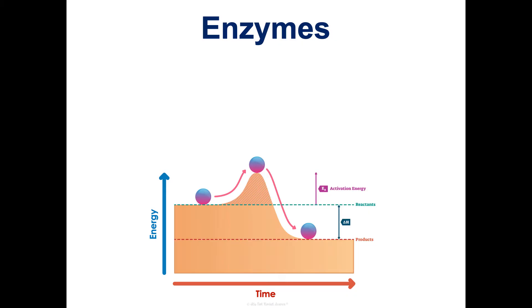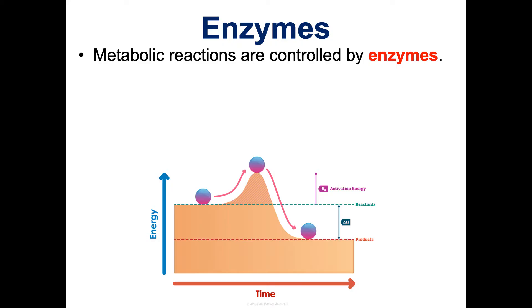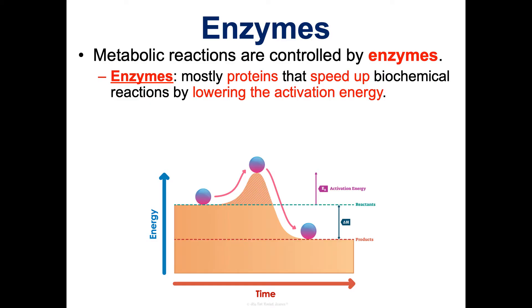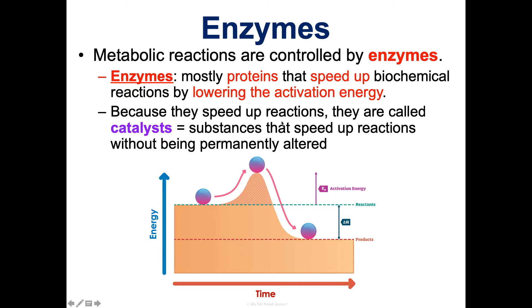Let's talk about enzymes. These are extremely important for metabolic reactions — all of the chemical reactions in your body that keep you alive at a cellular level are controlled by enzymes. Enzymes are mainly proteins — that macromolecule that does so many things. What they do is speed up biochemical reactions by lowering the activation energy, meaning they make it take less energy to get the reaction going. Because they're speeding up reactions, we also call them catalysts.